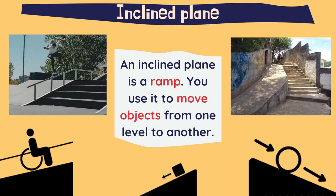Now the inclined plane. An inclined plane is a ramp. You use it to move objects from one level to another easily. It is easier to move objects through the ramp than going through the stairs. We can also use these ramps to go with a wheelchair or even to do skateboarding.